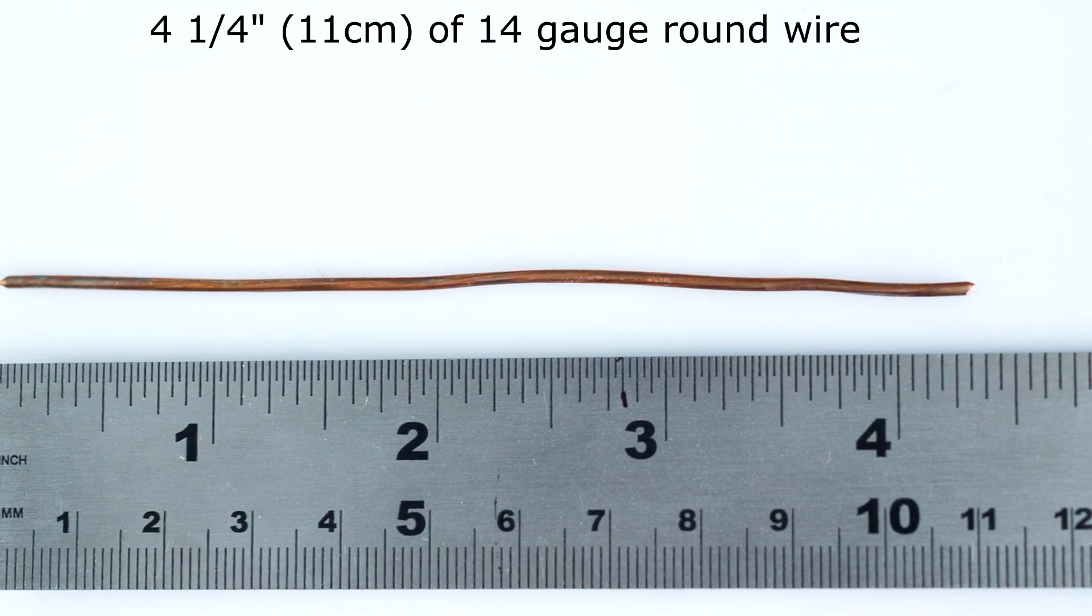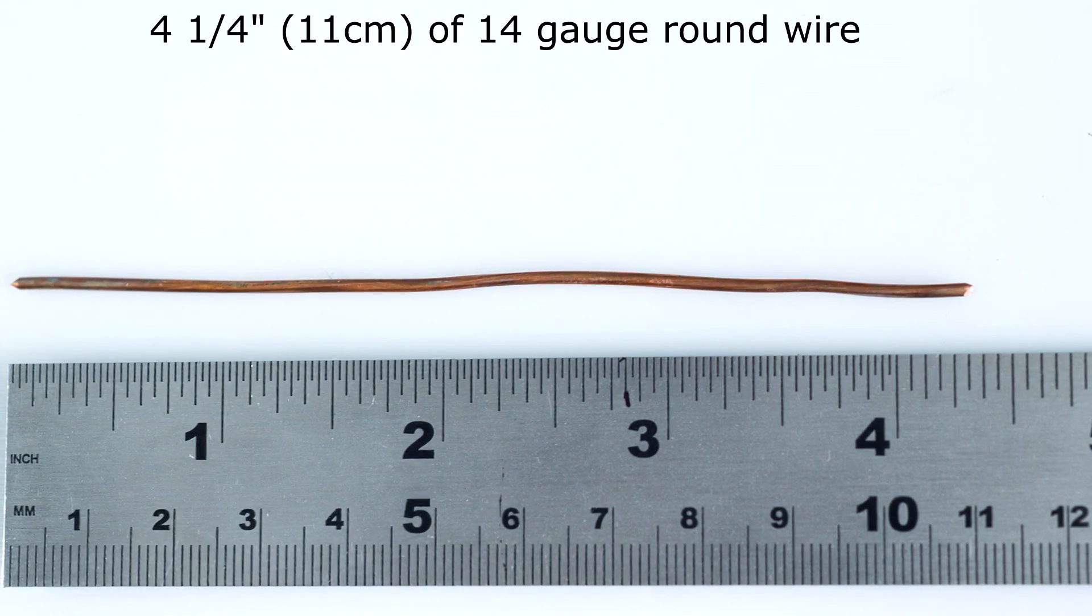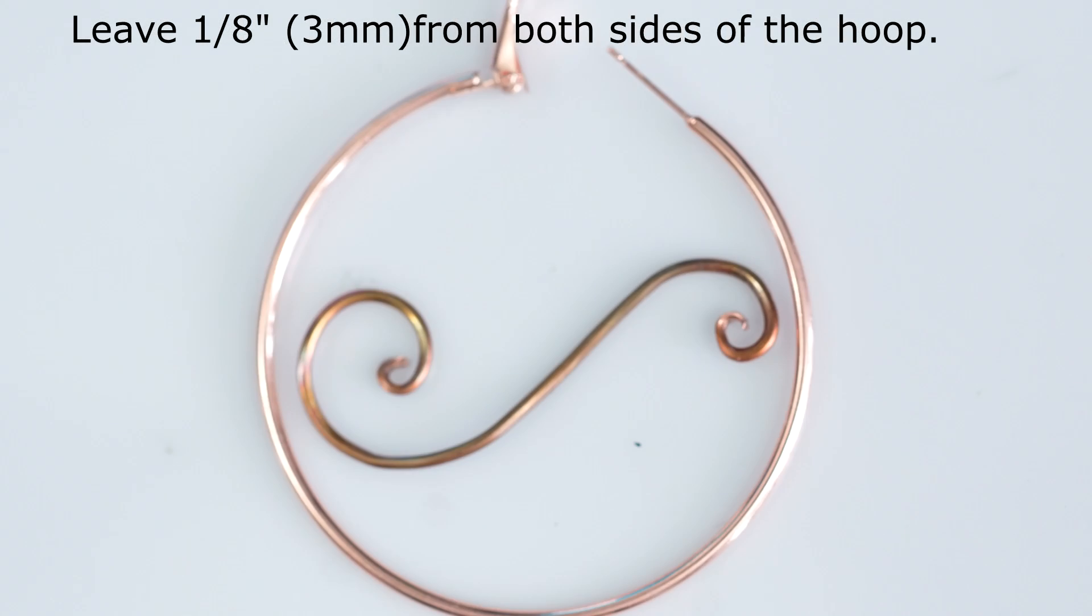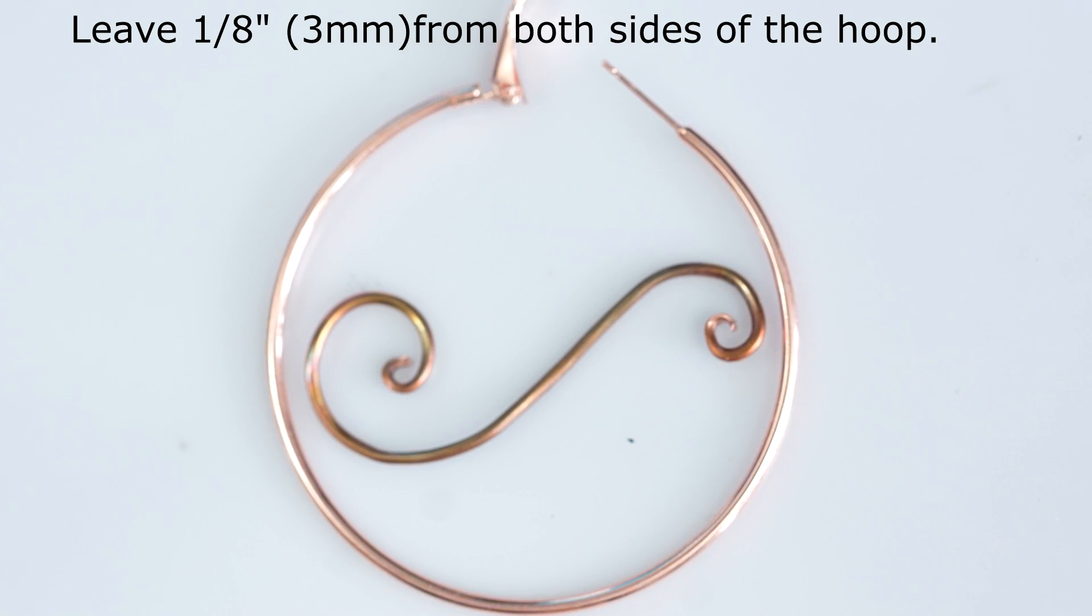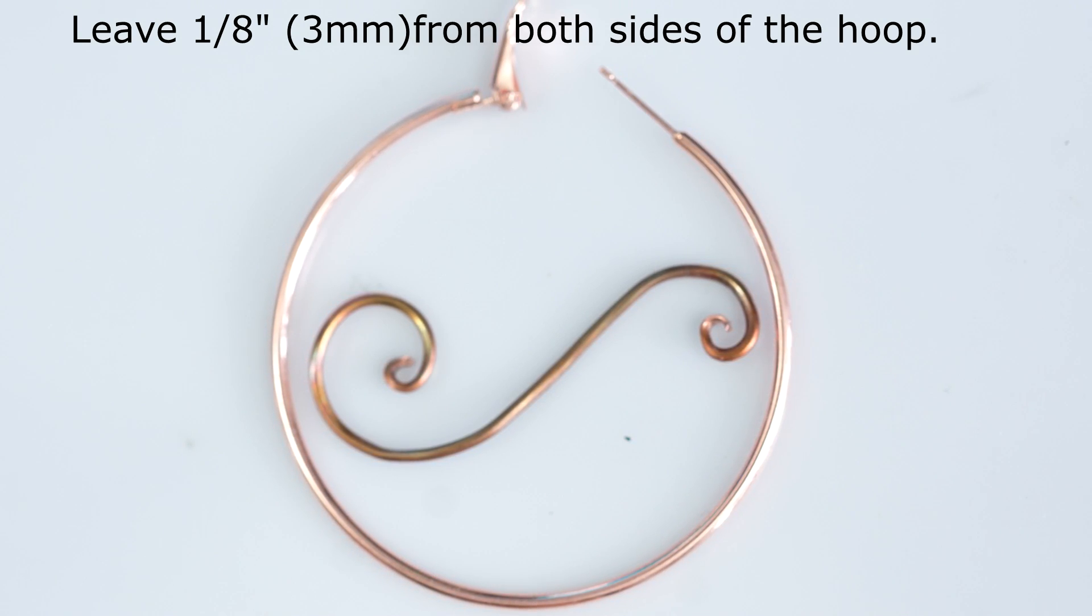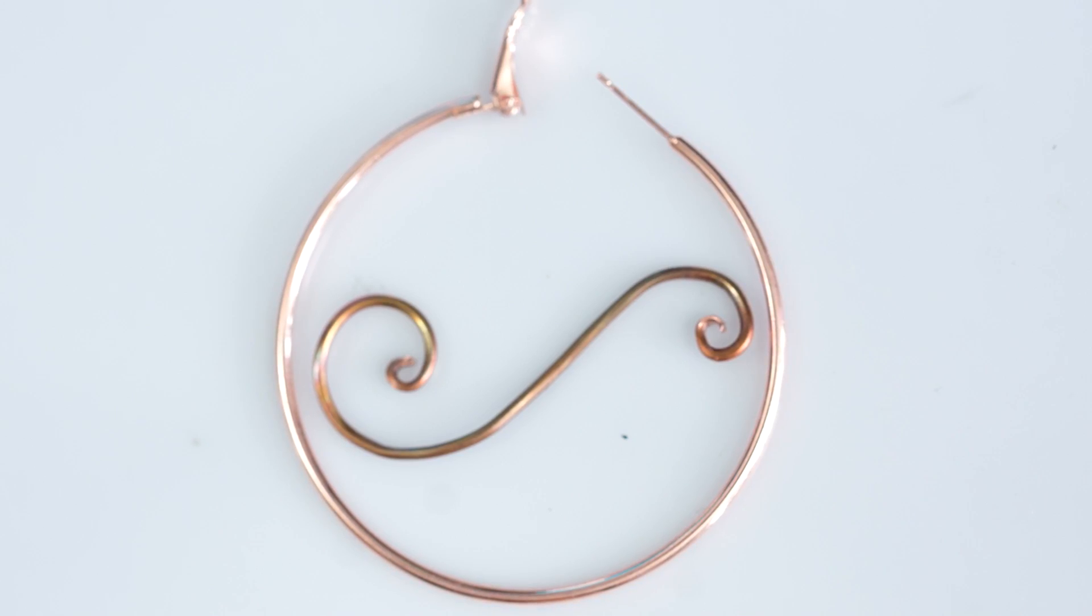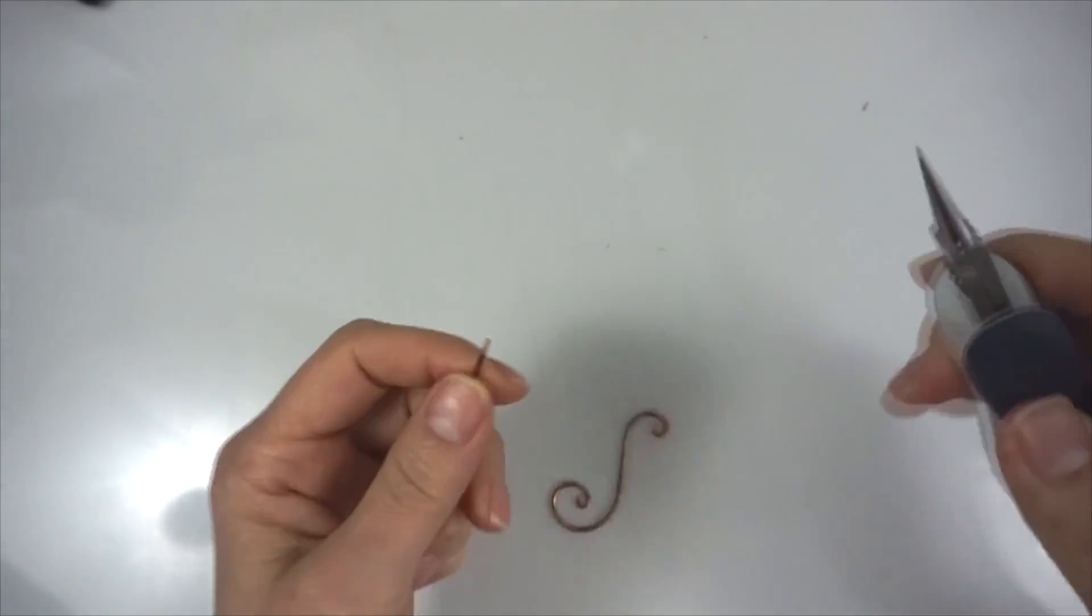I'm using 14 gauge round wire as a base and I'm going to create the shape out of it. Just make sure your wire stays inside of the earrings and has a little gap between them. I finished my first earring and started work with the second one.